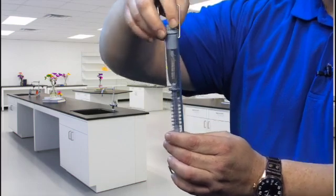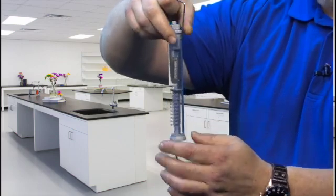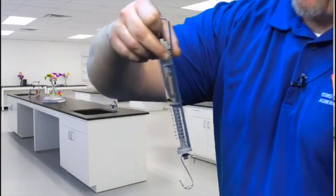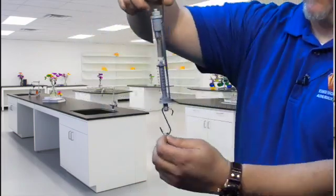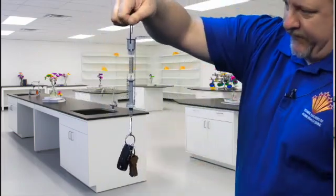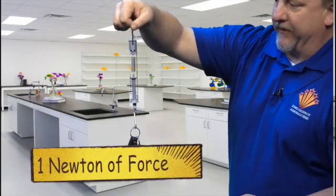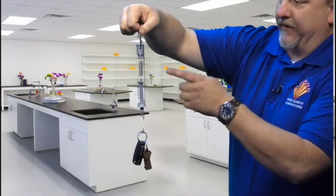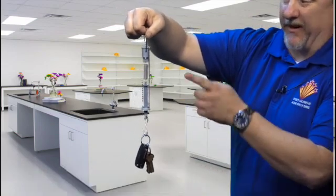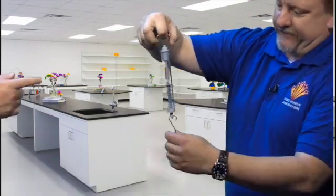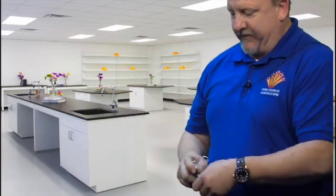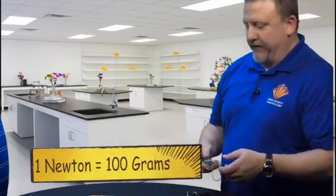And there's two different ways to use this. You can use it just by putting an object on the hook and hanging it. You see my keys weigh about one newton of force that's being pulled down by the gravity. And it's measuring the gravity against the spring. And on the other side it's about 100 grams. Yeah, 100 grams per newton.